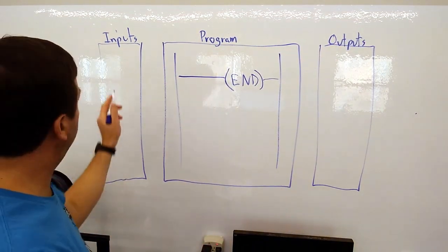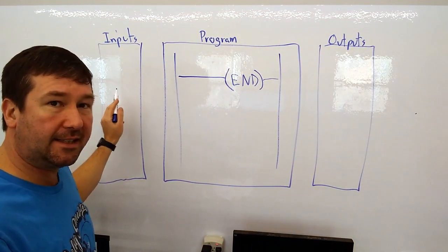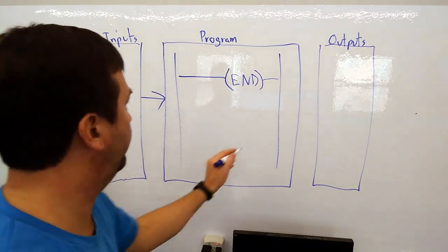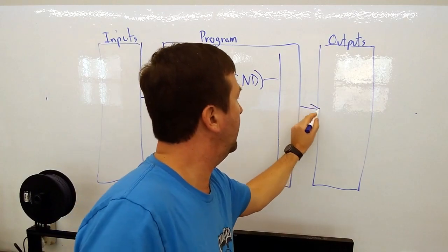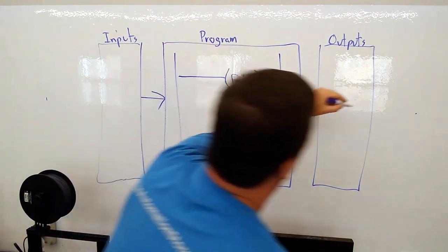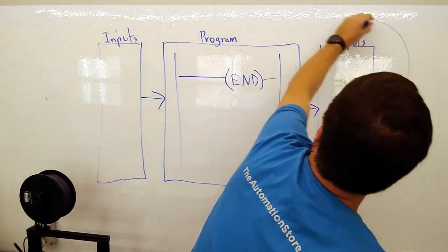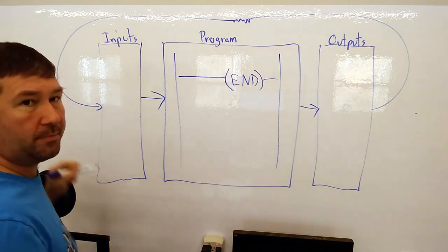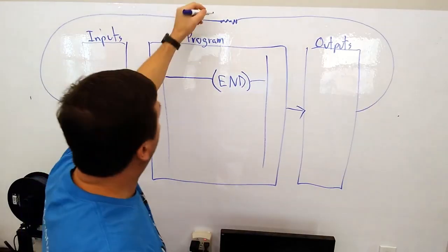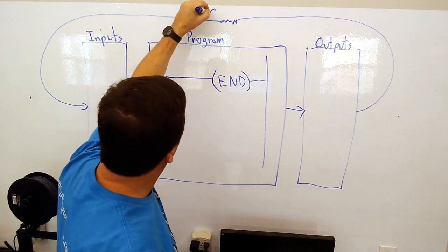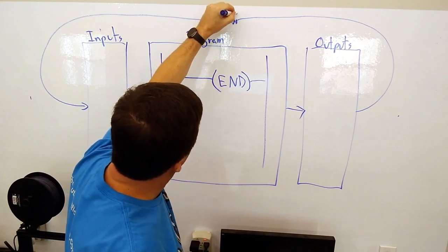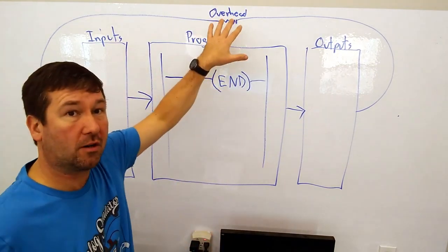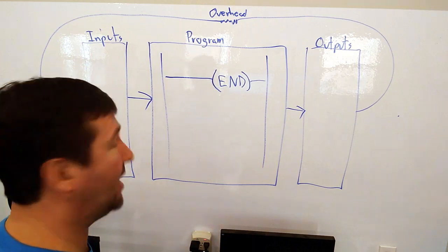And so the first thing a PLC does is it scans its inputs. Then it executes its program, then it updates its physical outputs, and finally it goes up here and it has a little something there, and then it goes back around to here. Now, we're not going to get into this little squiggly line up here, but it is called the overhead, and this is where the PLC does various maintenance steps. And actually, this is where it talks to RSLogix 500, some various things like that.